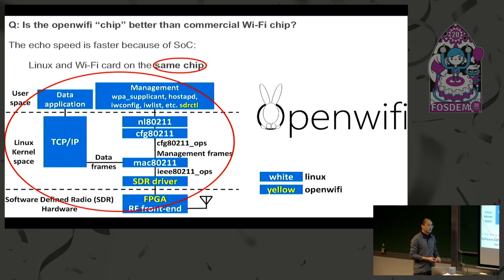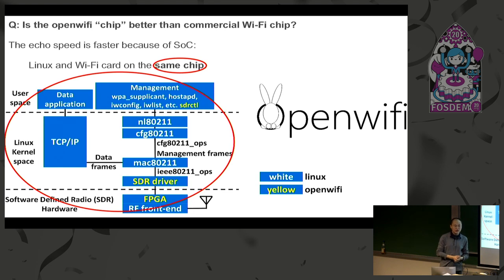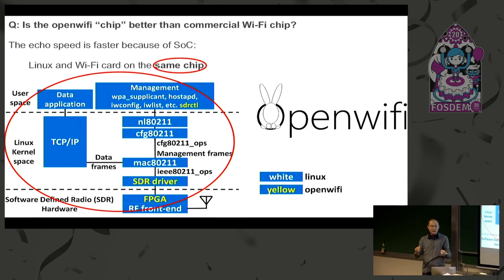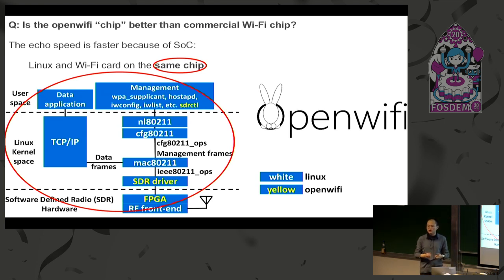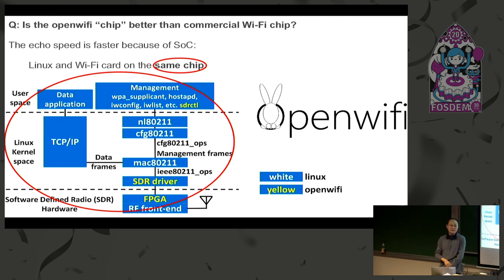We have one — not so big — advantage: if you ping our node, because it's Linux you can ping it, it has an IP address. Your ping round-trip latency is lower than a commercial chip. When you ping over a commercial chip, round-trip latency is always around 1 millisecond. In our design, you can have around 0.6 or 0.7 milliseconds, because it is the SoC — system on chip.